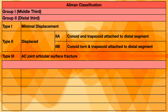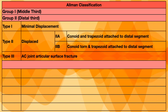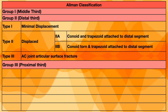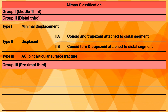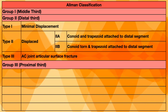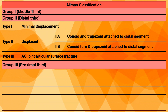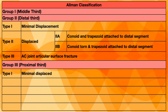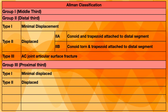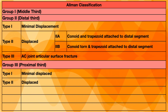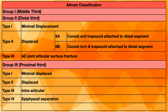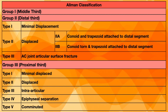Type 3 is an acromioclavicular joint intraarticular surface fracture. Group 3 is the proximal third clavicle fracture, towards the sternoclavicular joint. Type 1 is minimally displaced, type 2 is displaced, type 3 is intraarticular, type 4 is epiphyseal separation, and type 5 is a comminuted fracture.